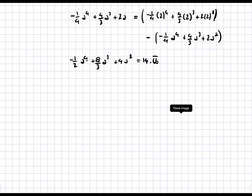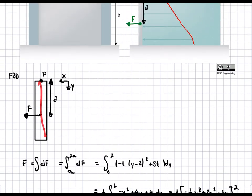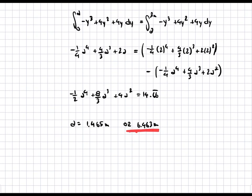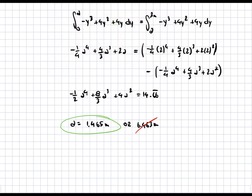Solving this equation using a solver gives two values: a = 1.465 meters or a = 6.463 meters. Since 6.463 meters is larger than the 2-meter length of the plate, that answer is discarded. We pick a = 1.465 meters because it is the only answer that fits between 0 and 2 meters, the bounds of the plate.